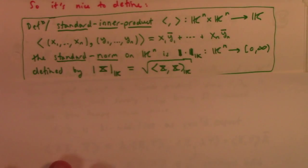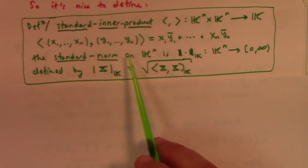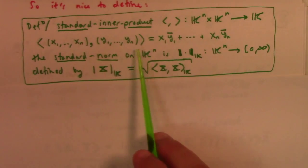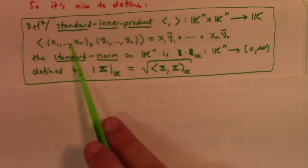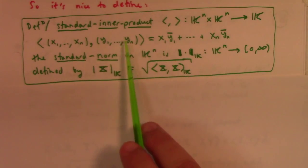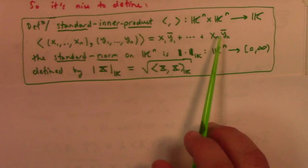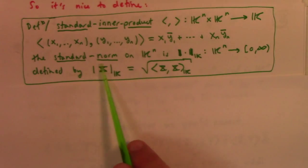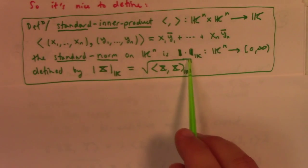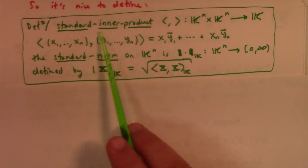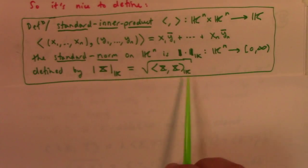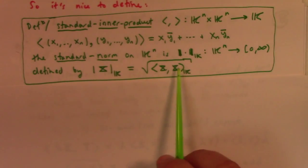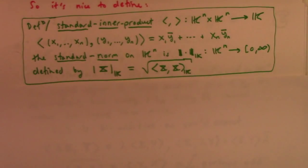So the standard inner product from K^N to K^N is defined in terms of the sum of the products of the components and the conjugate components. This is the standard norm on K^N, and the standard inner product on K^N induces the standard norm in the standard way.